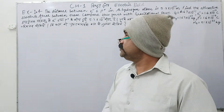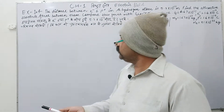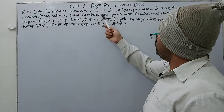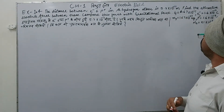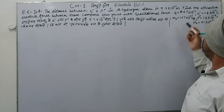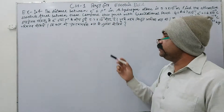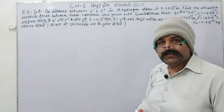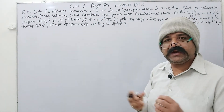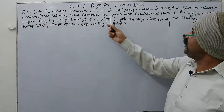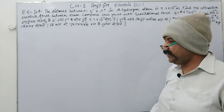Let's start the next lecture. We will study Example 1.4: the distance between electron and proton in a hydrogen atom is 5.3 × 10⁻¹¹ meter. Find the attractive electric force — attractive because the force is exerted between electron and proton. Compare this force with the gravitational force as given by Newton.